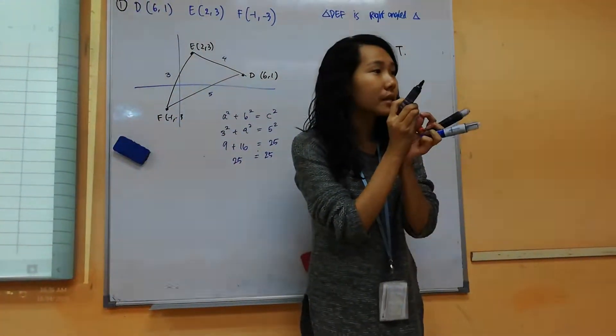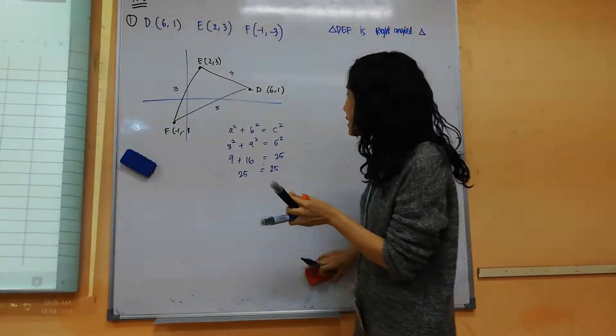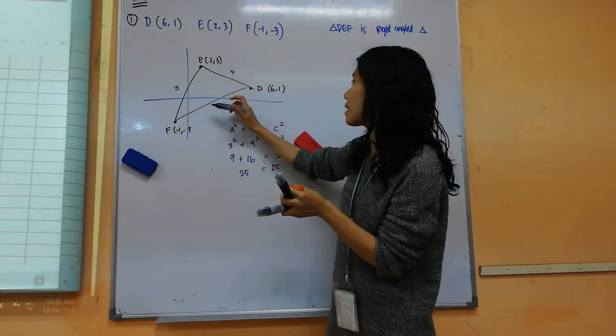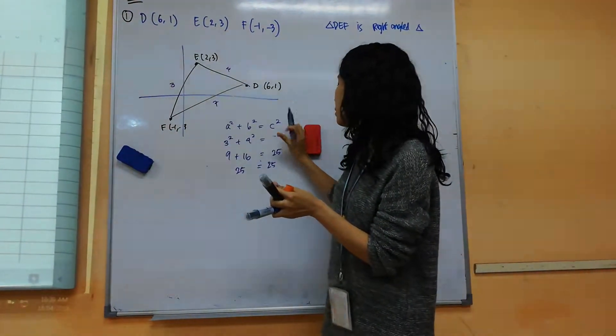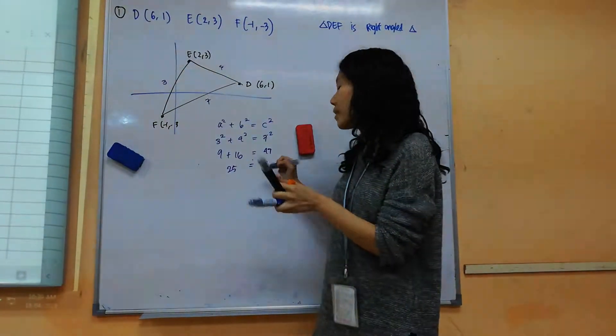So if it fits, meaning it's a right angle triangle. But let's say if I change it to 7. Do you think it will fit? No. So can I say that this is a right angle triangle? No.